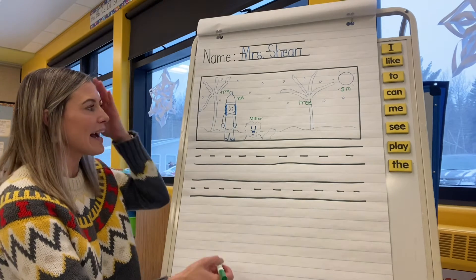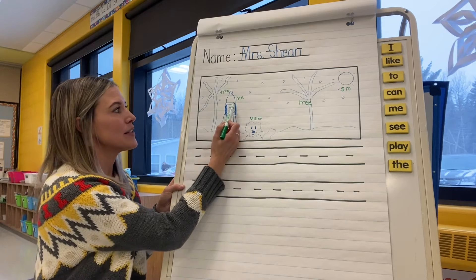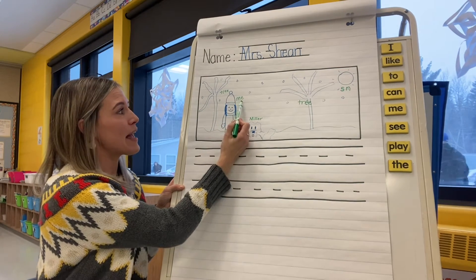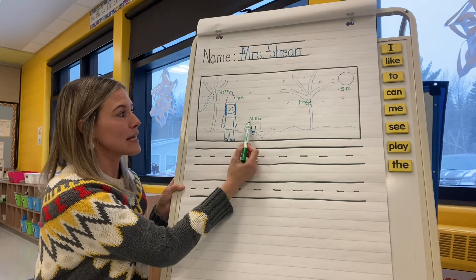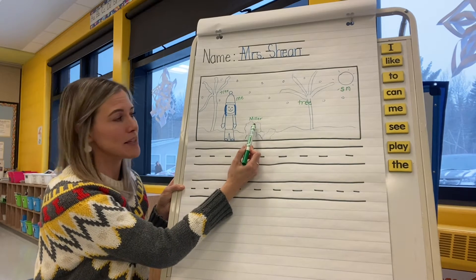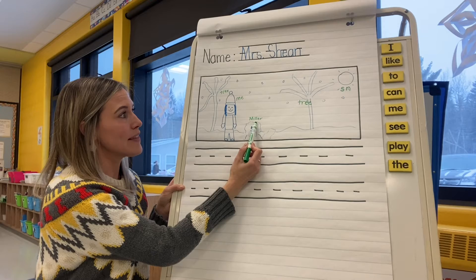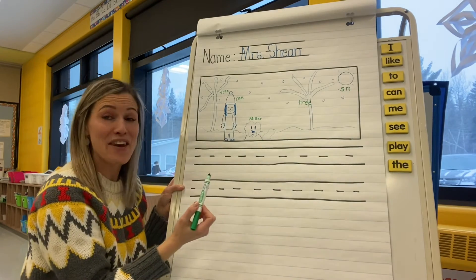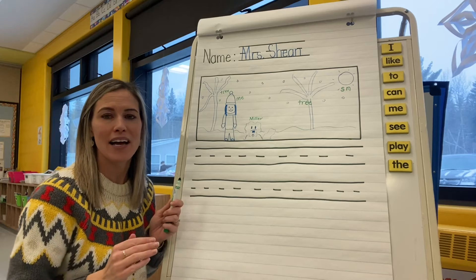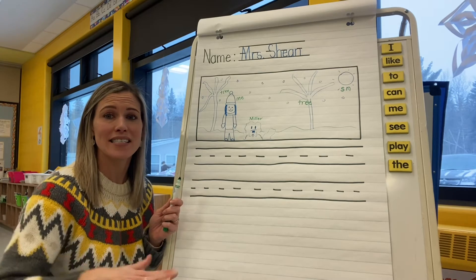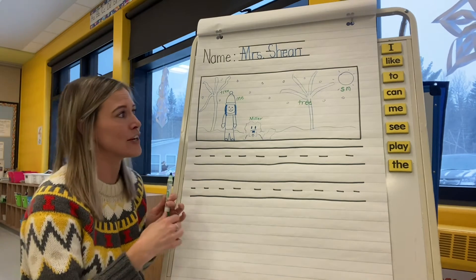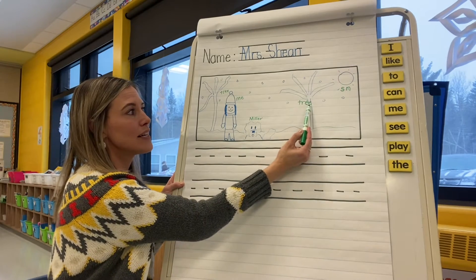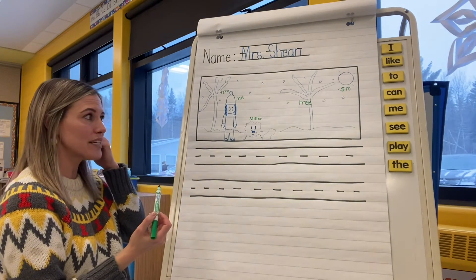So I have already labeled "me" — we know that we need to label ourselves in our story first, so I have M-E for me. I've labeled Miller's name; I know his name in a snap, so I've written that above him. I have S and N for sun — if I take my time and say s-un, I hear those two letters. Tree: T-R-E. So I have tree labeled as well.